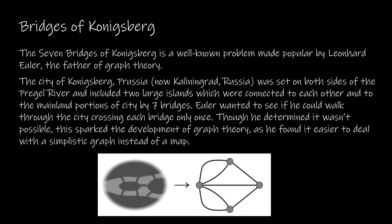This is a very well-known problem by Leonhard Euler, who we consider the father of graph theory. Essentially, how graph theory started is in the city of Königsberg, Prussia, which is now Kaliningrad, Russia. The city is set on both sides of the river and there are two large islands connected, with a total of seven bridges.